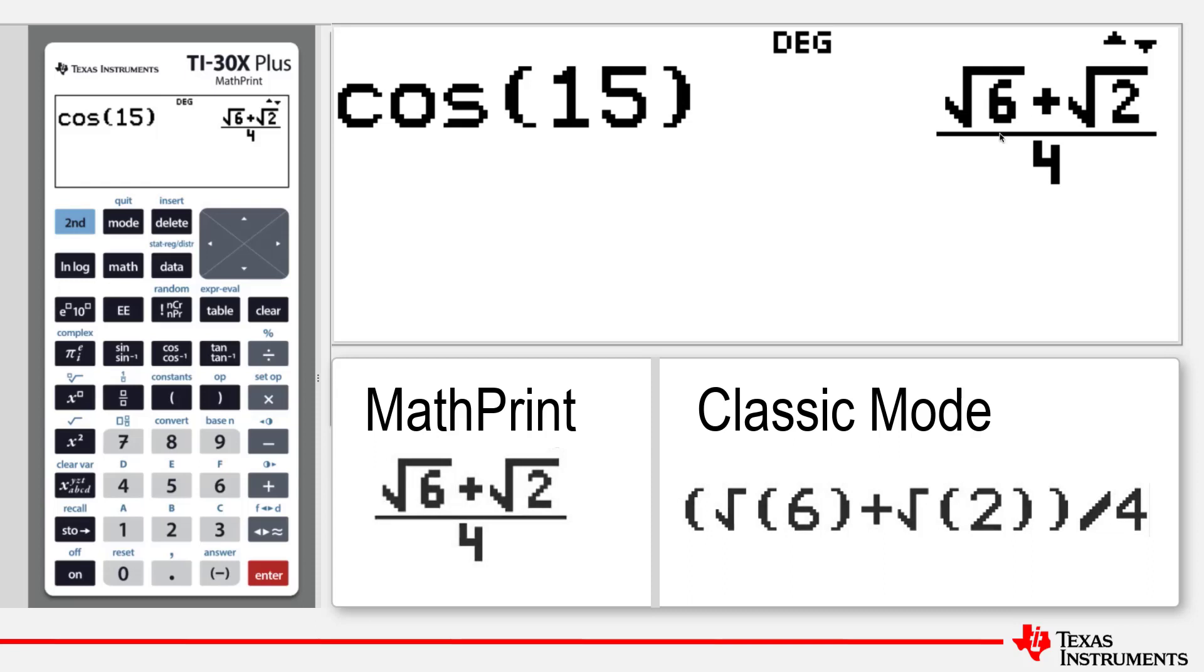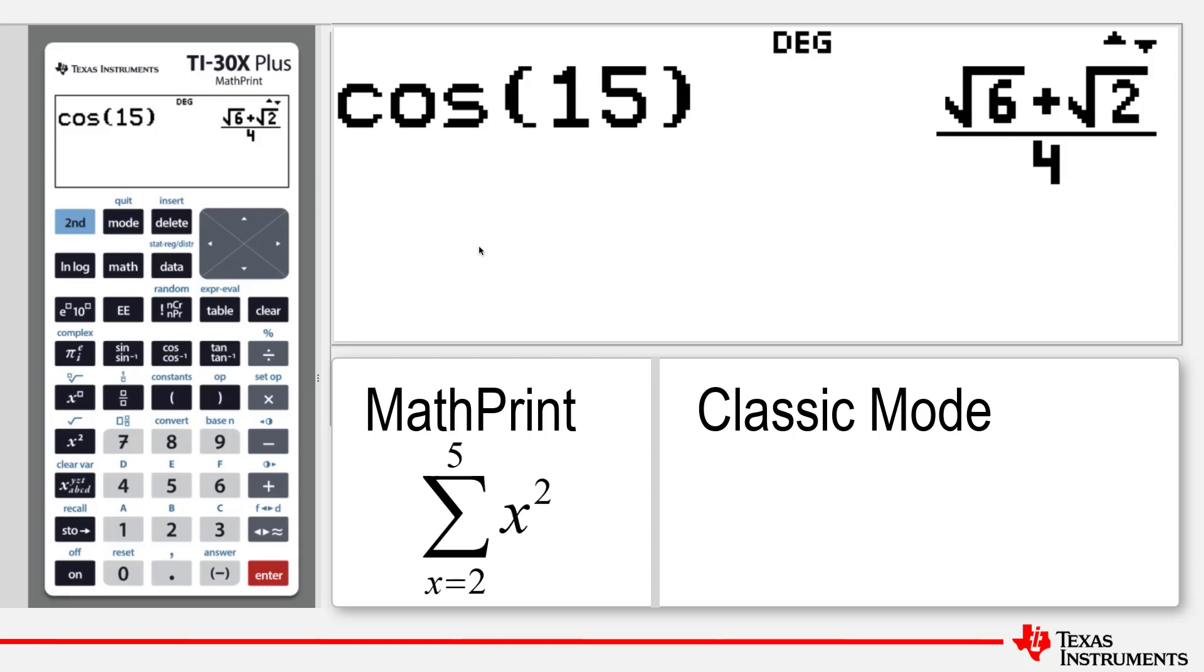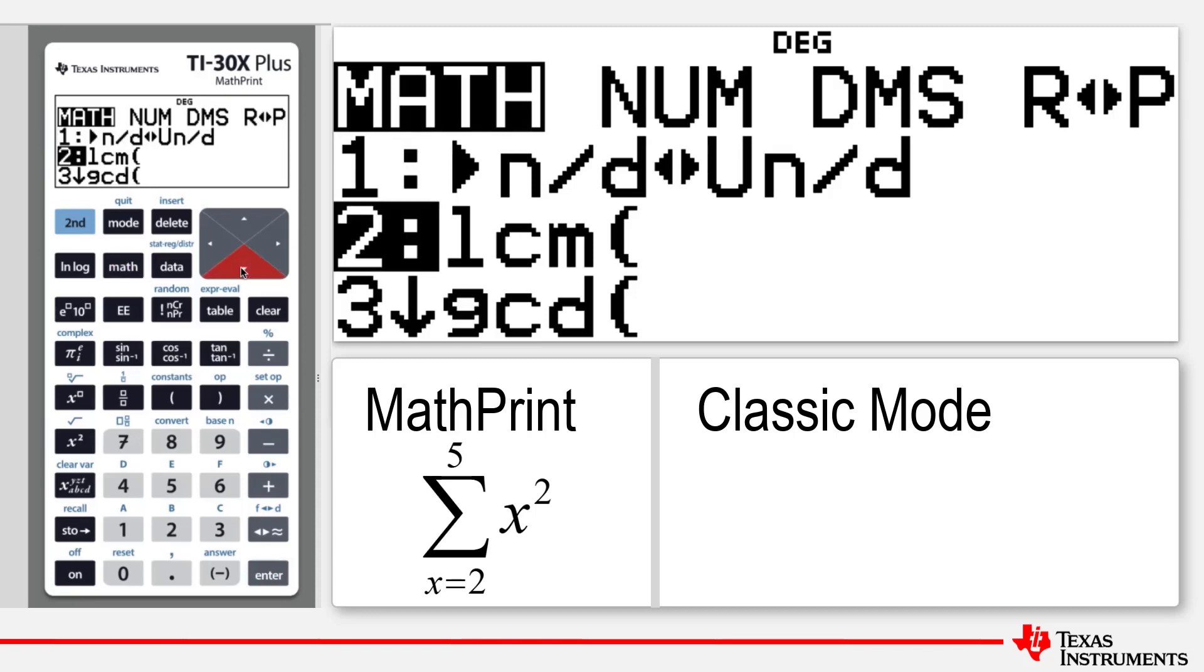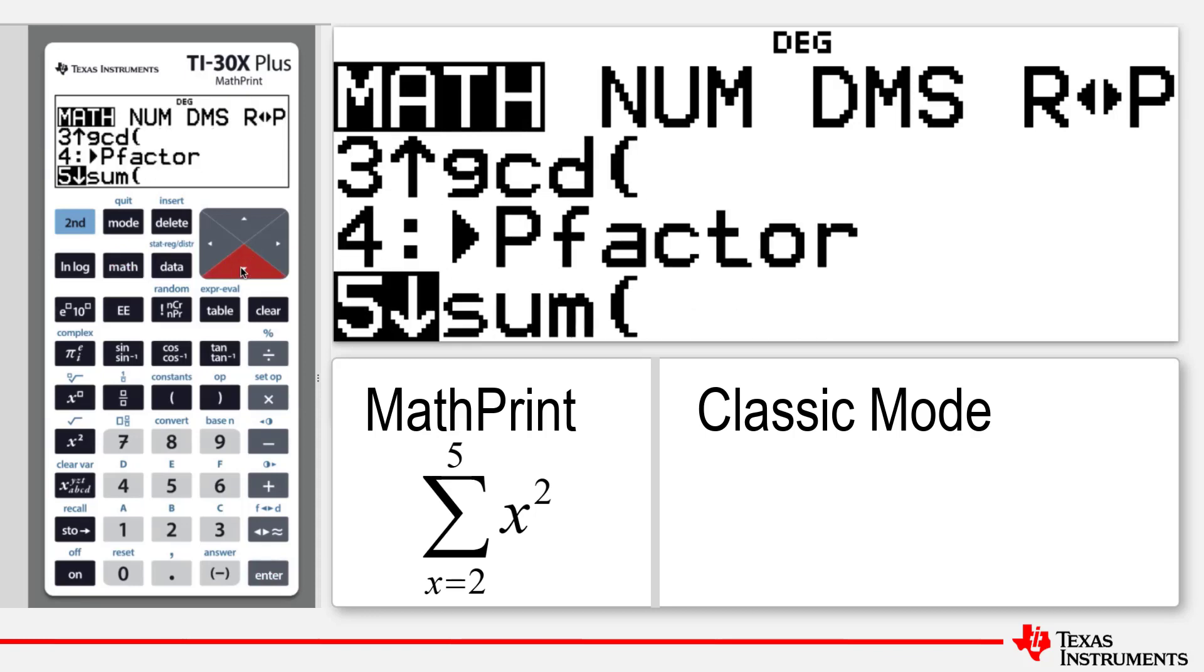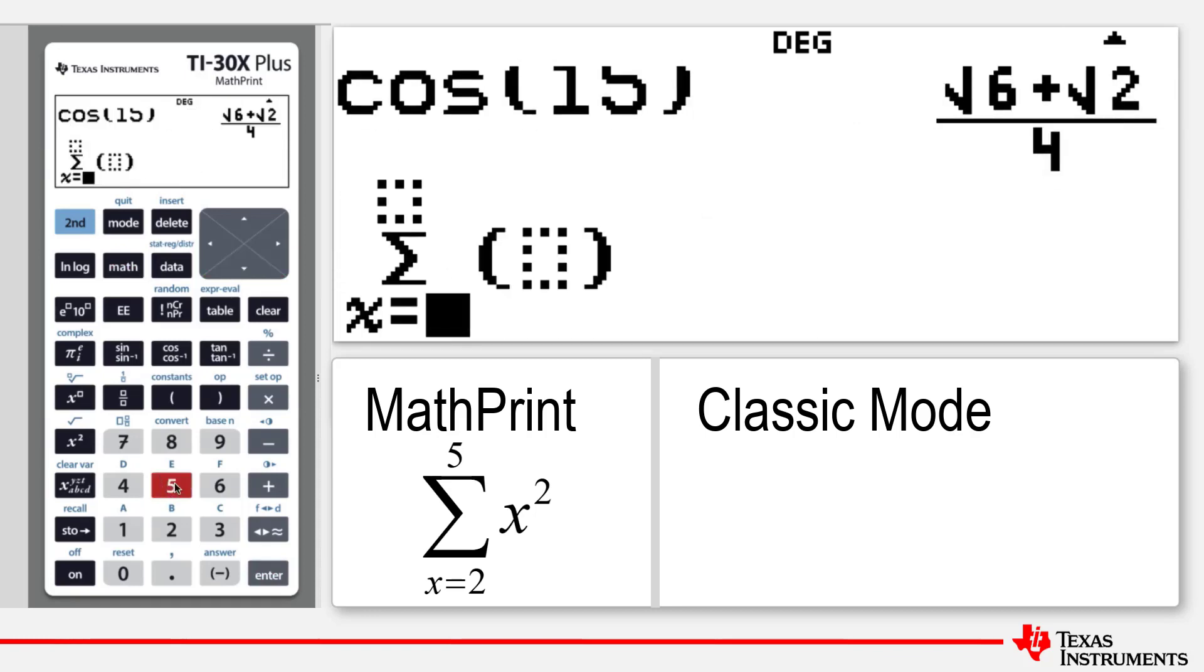A final example is the summation of x squared from x equals 2 to x equals 5. Press Math to select Sum. Once again, we are presented with a mathematically intuitive template allowing easy inputs. So from x equals 2 to x equals 5, and we're doing the sum of x squared.